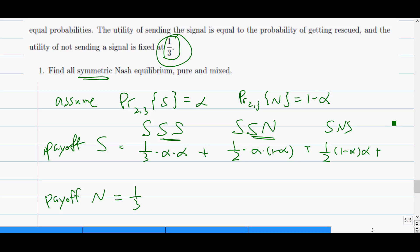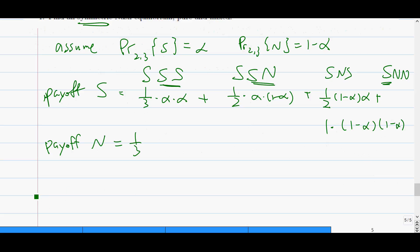And the last one is SNN. So remember, I always play S. So that I get rescued with probability 1. And that event happens with probability this. So then we can write the indifference condition, which is just simply these two are equal to each other. So let's simplify it a bit. This plus half, so there are two halves. So it becomes 1 times alpha times 1 minus alpha plus 1 third alpha squared. And this is equal to a third.